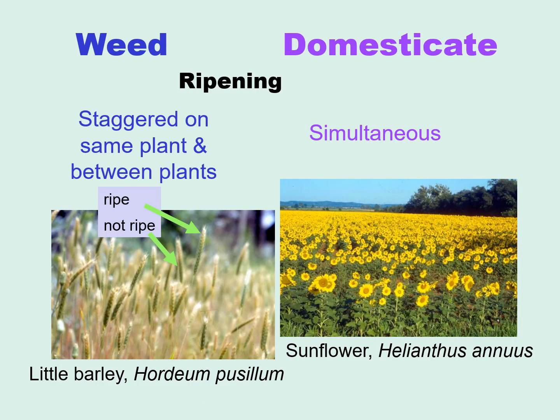Another way in which weeds and domesticates differ is that ripening is staggered in weed seeds — not only between plants but on the same plant — whereas in domesticates, ripening is oftentimes simultaneous. This is why when you're growing sweet corn, you need to plant another crop about every two weeks if you want to keep having sweet corn to eat.